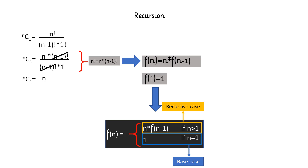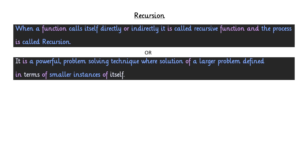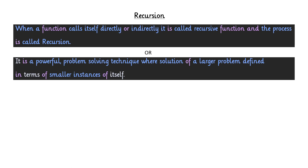Now I hope you have some idea about the terminology of recursion. Let's see some theoretical aspects. What is recursion? When a function calls itself directly or indirectly, it is called a recursive function, and the process is called recursion. In other terms, recursion is a powerful problem-solving technique where the solution of a larger problem is defined in terms of smaller instances of itself. Give me some time — I will justify both statements.